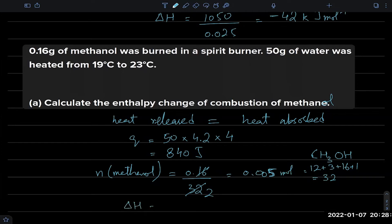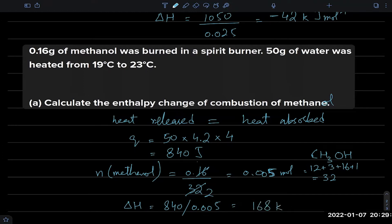So ΔH = 840 J ÷ 0.005 mol = 168,000 J/mol = 168 kJ/mol. That is the enthalpy of combustion of methanol for one mole.